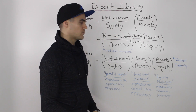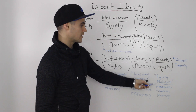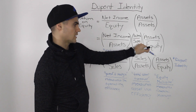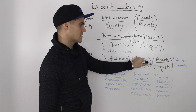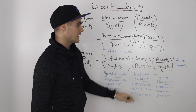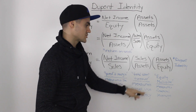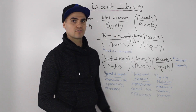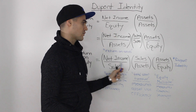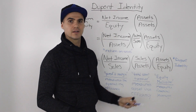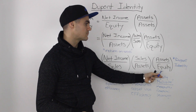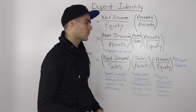The third component — assets over equity — is the equity multiplier, which we've already covered. Assets and equity both come from the balance sheet. This ratio measures financial leverage, or how much debt you're taking on. Out of the three components, this last one is the more artificial source, and it's the one you've got to be really careful with.